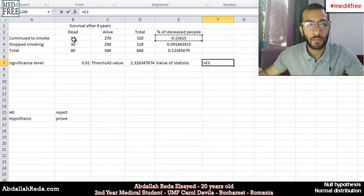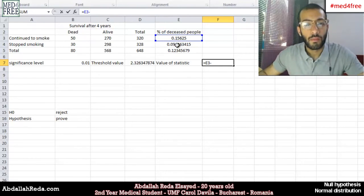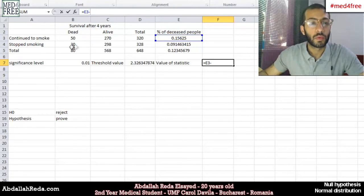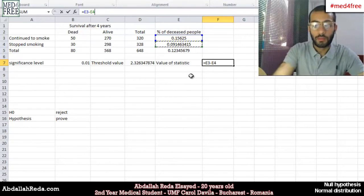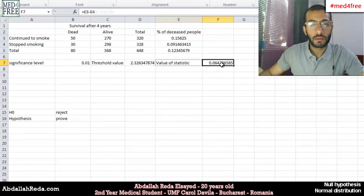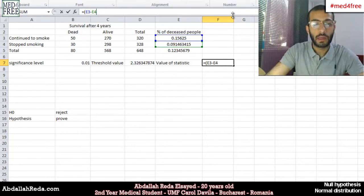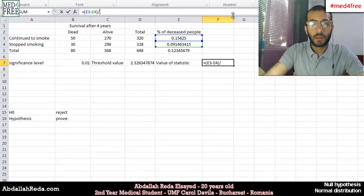So the percent of these people, and then minus the percentage of the people who died out of the people who stopped smoking. So this one, we put them in brackets, like that,